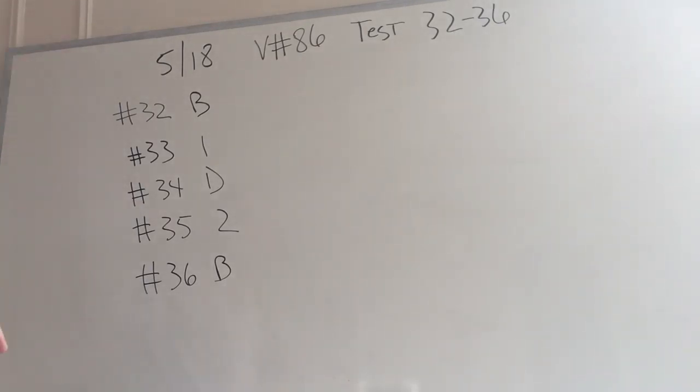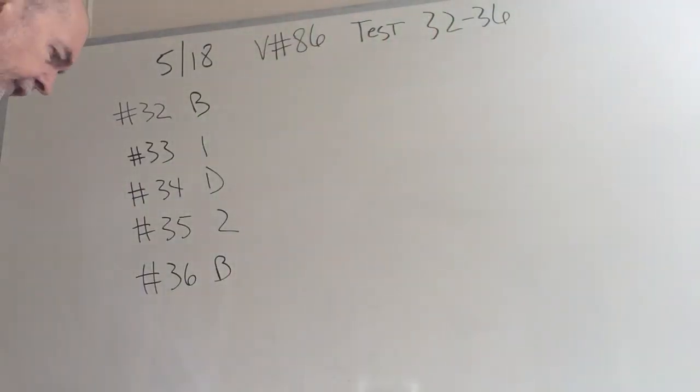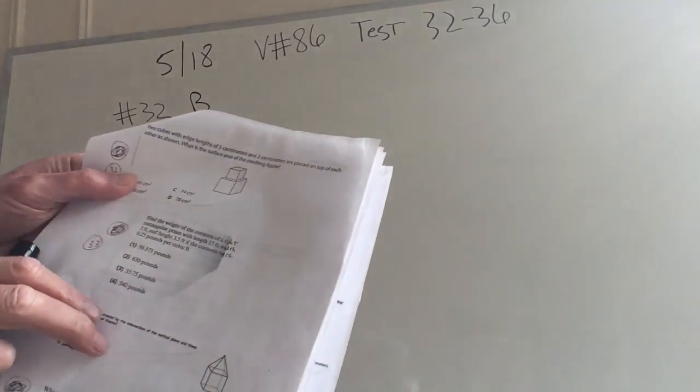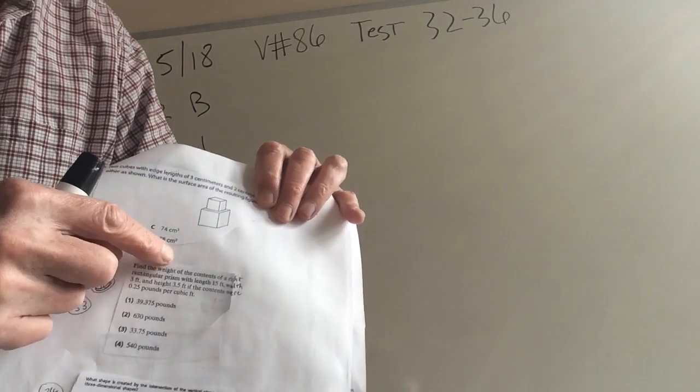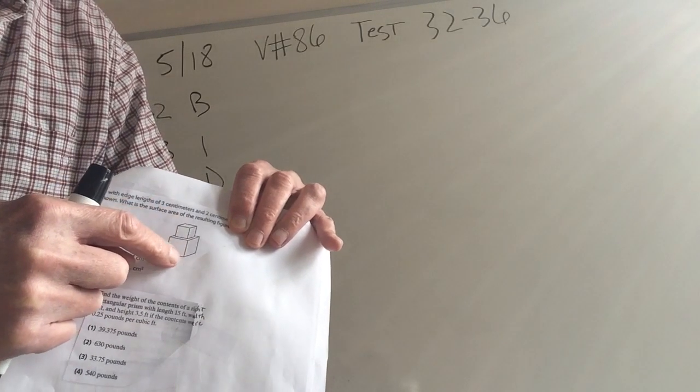Go over the test and see what you did wrong because many of you didn't do so hot on the test. So 32, a lot of kids got wrong. Let's work it out together.